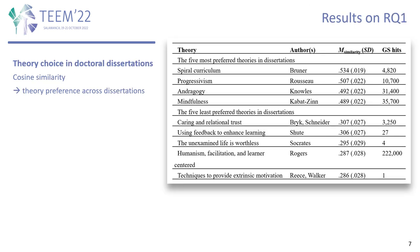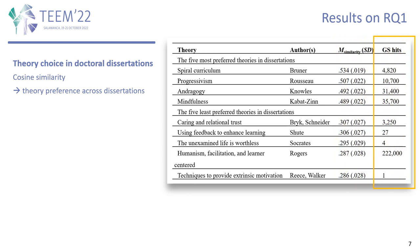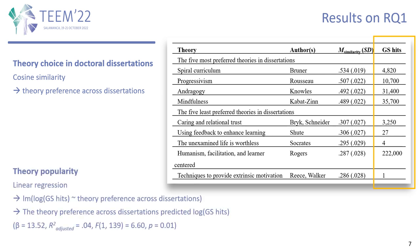Regarding results on RQ1, we found some theories were preferred over others. From the table, we could see the five most and five least preferred learning theories according to their average cosine similarity score. On the right-most column, Google Scholar search hits were provided to indicate theory popularity. Based on linear regression, we found the theory preference across universities was significantly related with the logarithm of Google Scholar hits.